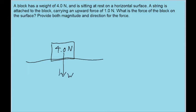There is the normal force acting upwards on the block from the table, and then there is an additional upwards force from the string, and this one has a magnitude of 1.0 newtons.